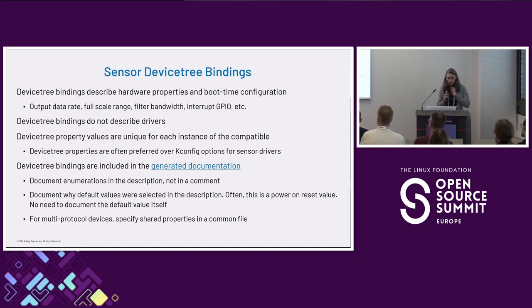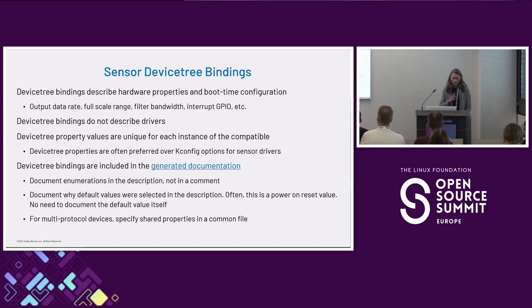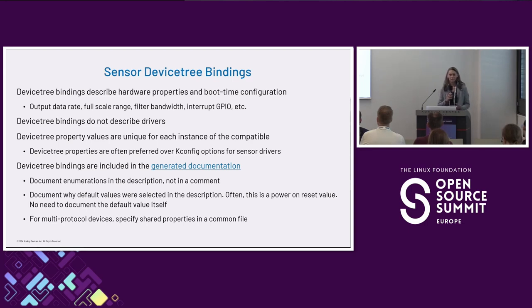Device tree bindings describe the hardware properties and the boot-time configuration. This isn't unique to sensors — it's common across the tree. Within the sensor space, the kinds of properties you typically see in device tree bindings are things like output data rate, the full-scale range of the sensor — is it a 2G, 4G, 8G accelerometer? If there's a low-pass filter bandwidth, interrupt pins. These are the hardware properties of the sensor device itself.